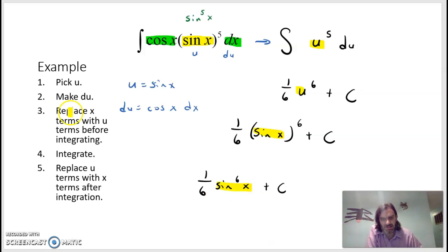So we picked u. We got du. We rewrote. So now it's all in terms of u. Can't just replace some of the things. And then integrate it and then go back to x.